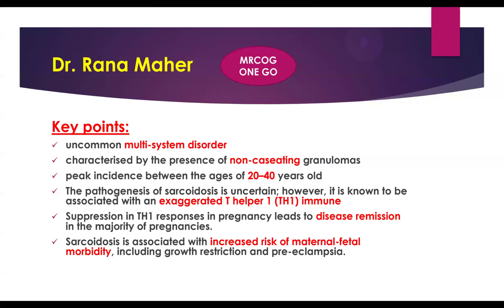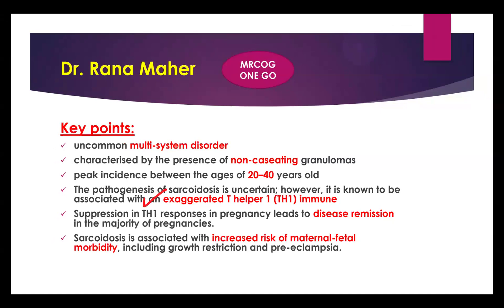The pathogenesis is uncertain or unclear, however it's associated with exaggerated T-helper cell activity. This is important because during pregnancy, suppression of the T-helper cell leads to disease remission. That's why it's important to know the theories regarding pathogenesis of sarcoidosis.